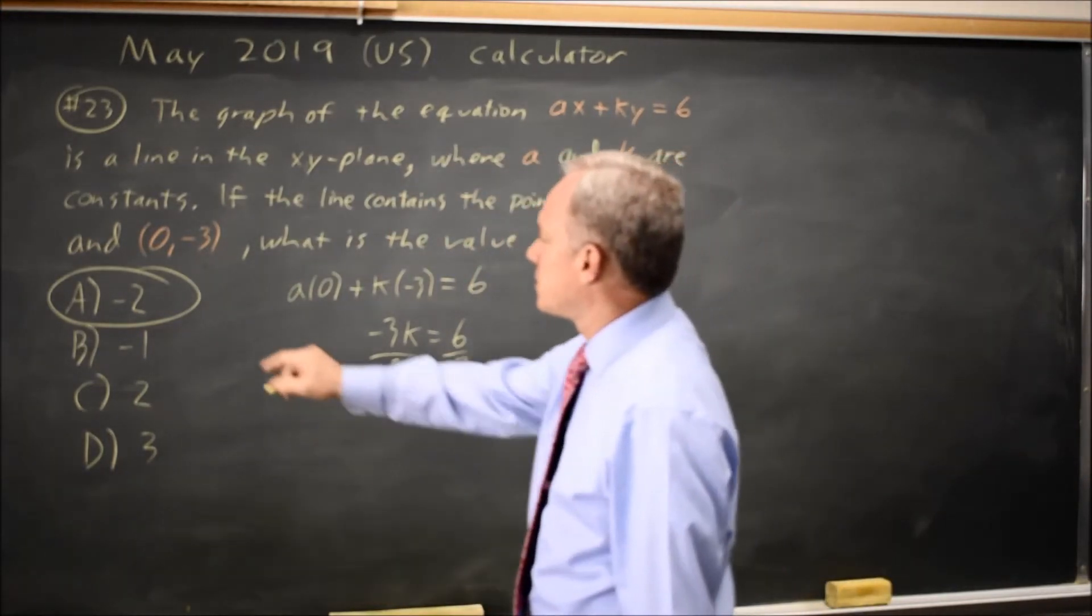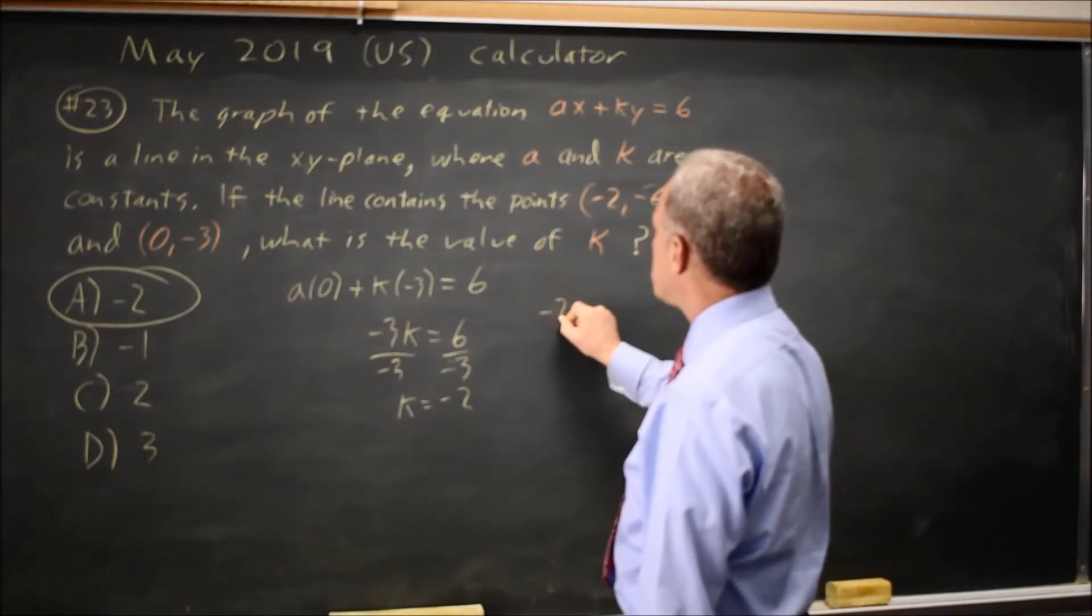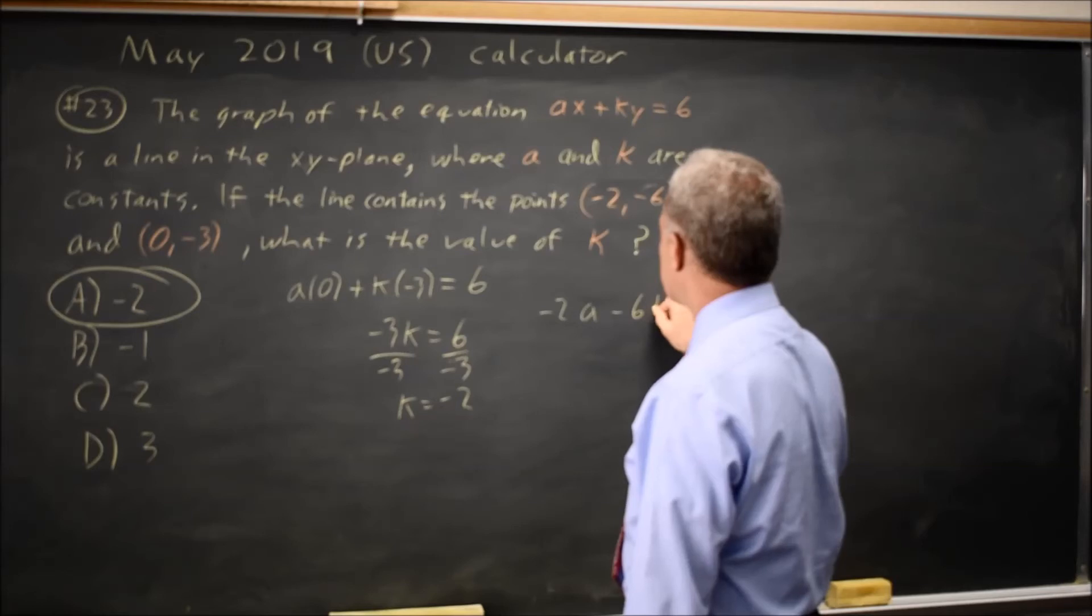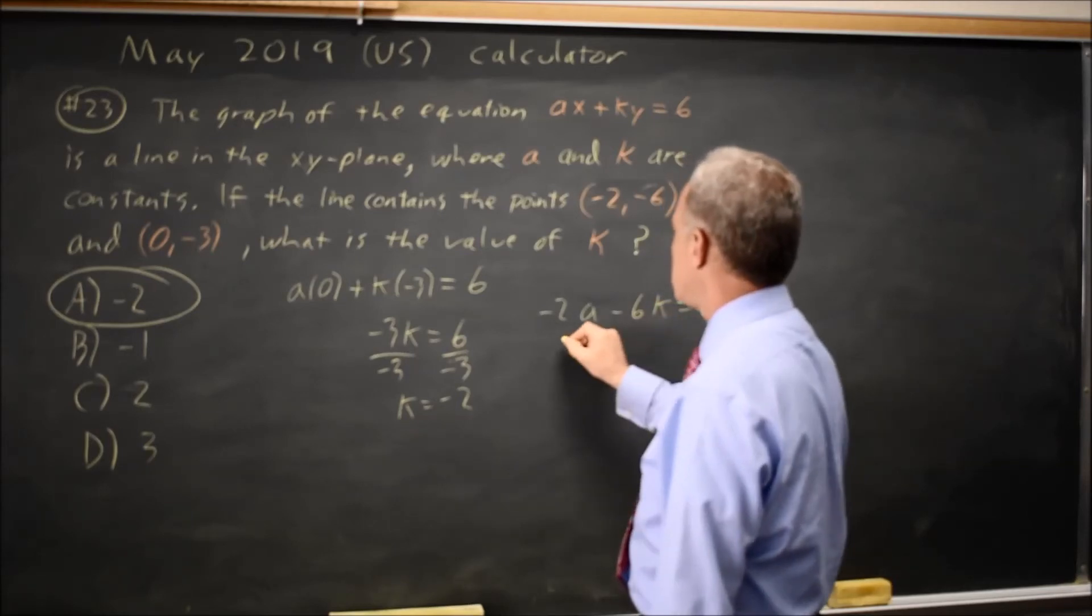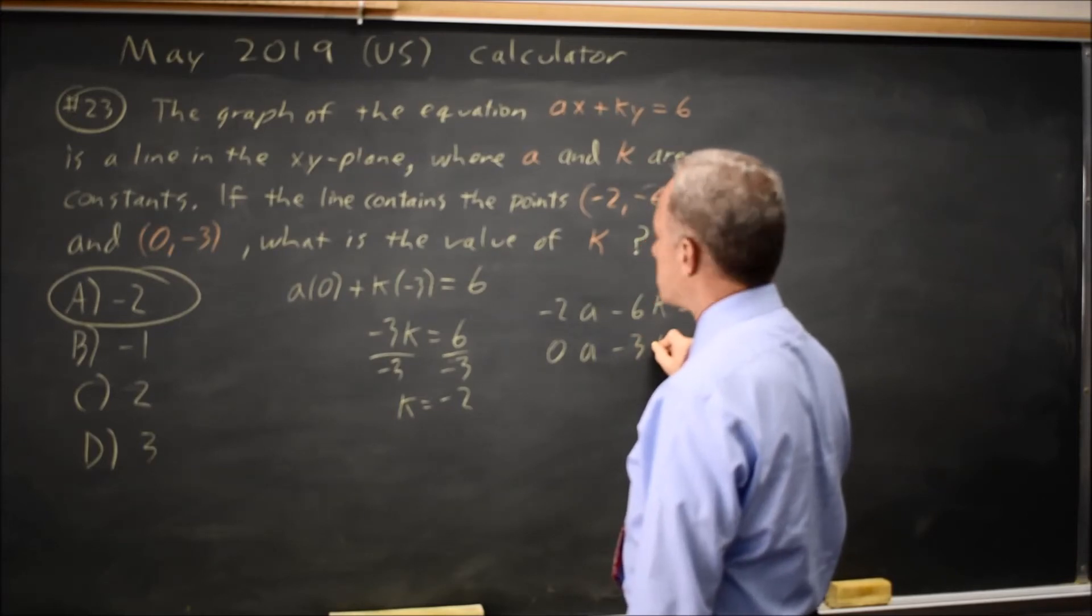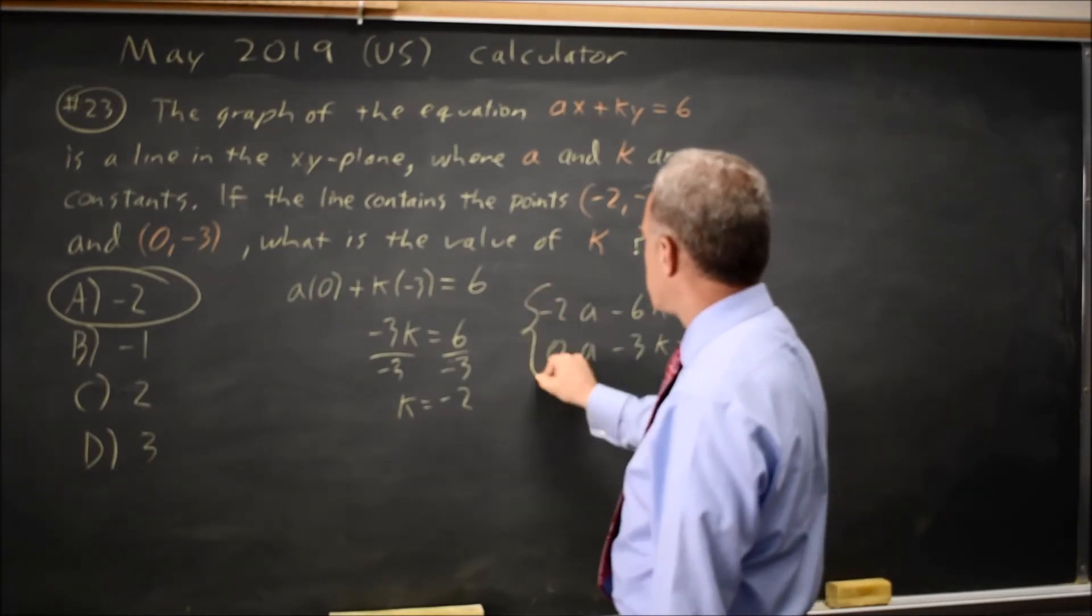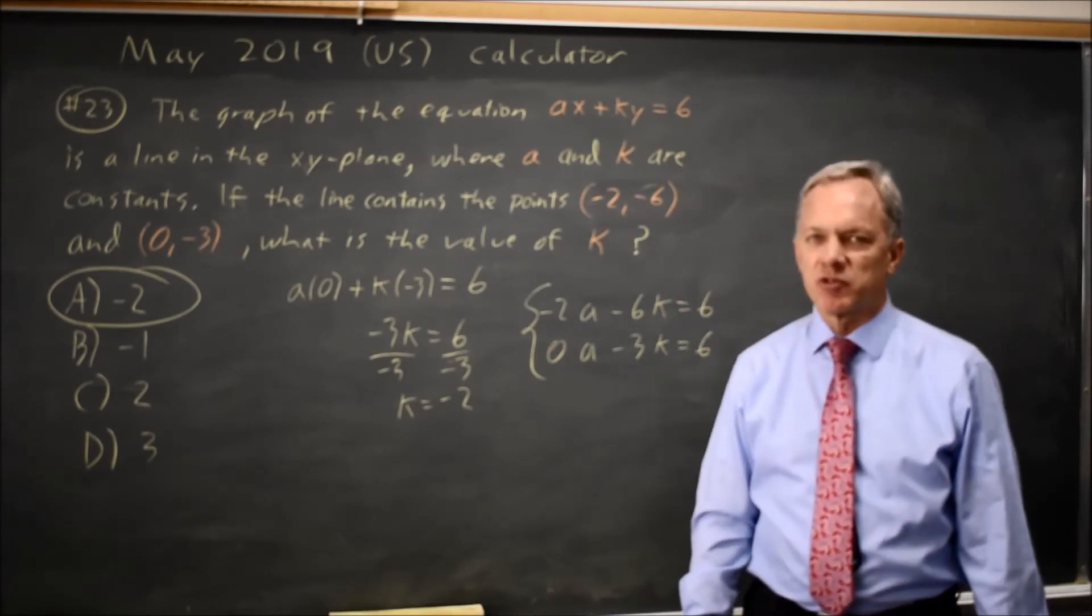If we hadn't had 0 for the first coordinate, we could have written a system of equations. Negative 2 times A minus 6 times k equals 6, and 0 times A minus 3 times k is also 6. I could solve this system of equations by any of a variety of methods,